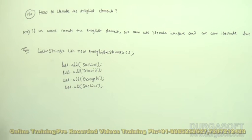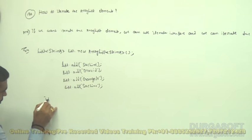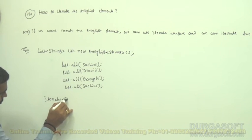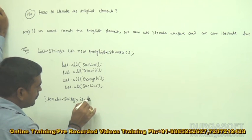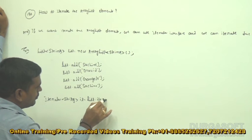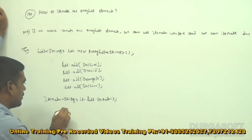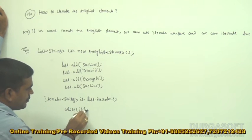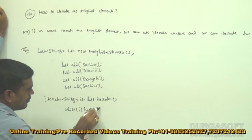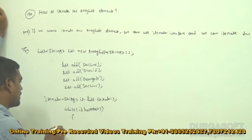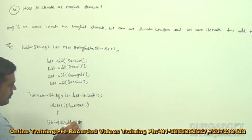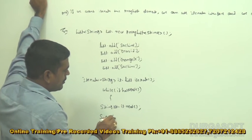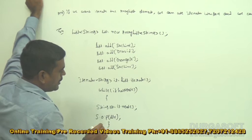After that, use the iterator and we can iterate. How to iterate? Like this: Iterator it is equal to list dot iterator. Then while it dot hasNext, string STR is equal to it dot next method. Then System dot out dot println STR.